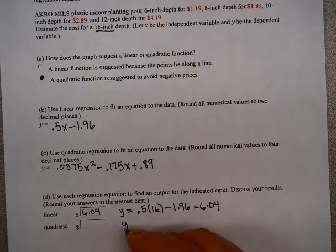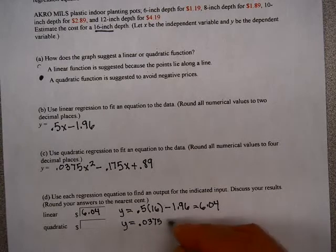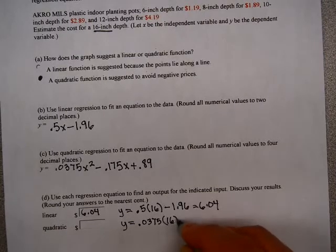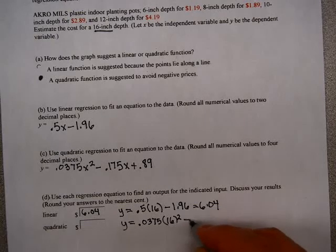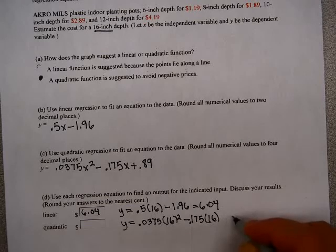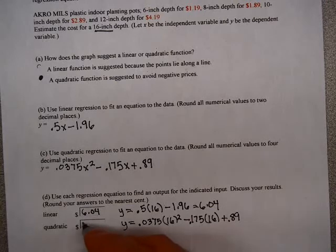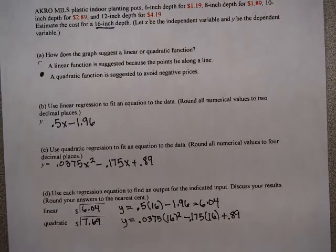In my quadratic equation, I get 0.0375X squared, but X again is 16, and 0.175 times 16, replacing X with 16 again, and plus 0.89. If I do all that arithmetic, I get $7.69. I hope this example was useful and helps you complete some of your homework assignment.